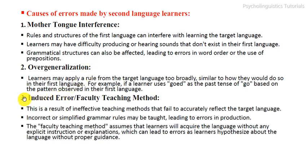The third cause is induced error, or faulty teaching method. This is a result of ineffective teaching methods that fail to accurately reflect the target language. Incorrect or simplified grammar rules may be taught, leading to errors in production.